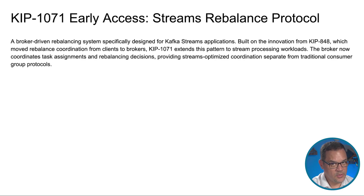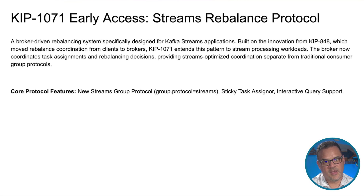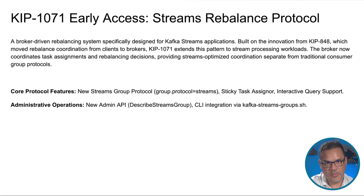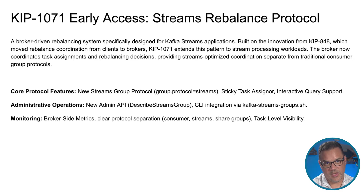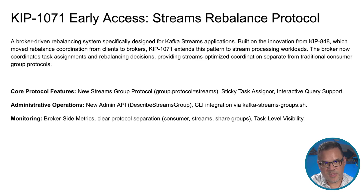It's going to use a new group protocol value called, you guessed it, Streams. There are new operations in the Admin API to describe Streams groups, as well as a new CLI script. As for monitoring, there are new broker-side metrics that bring a clear protocol separation between your traditional consumers, your share groups, and now your streams — making it easier to differentiate between the consumers of your data streams. Better task-level visibility in Kafka Streams applications? Yes, please.